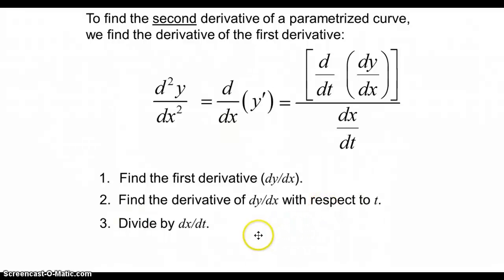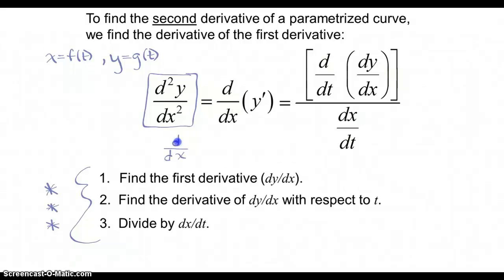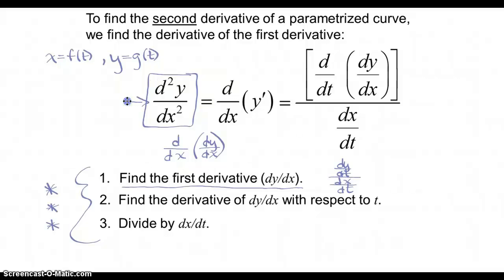Now the second derivative — it's not quite as intuitive as the first. It's a three-step process. If you're given parametric curves x = f(t) and y = g(t) and asked about anything involving the second derivative — concavity, inflection points — you need to know how to take it. Recognize that the second derivative is just the derivative with respect to x of the first derivative. Step 1 is always to find dy/dt over dx/dt.